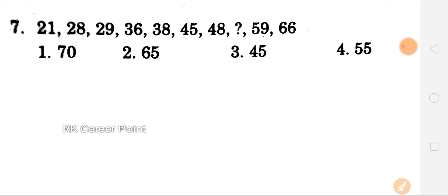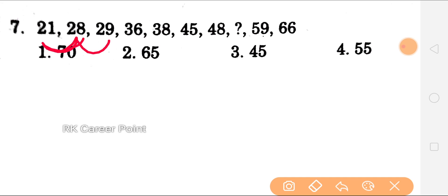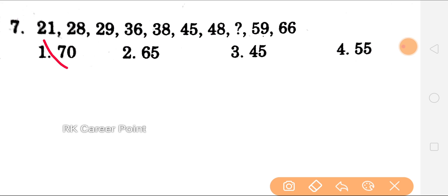Next question: 21, 28, 29, 36, 38, 45, 48, question mark, 56, 59, 66. We need to find the number at the question mark. Let's look at the gap — there is a gap of 7 between some numbers. But this gap is not common throughout. Let's check alternate numbers: 21 to 29 — the gap is 8. So 21 plus 8 = 29. Then 29 plus 9 = 38.